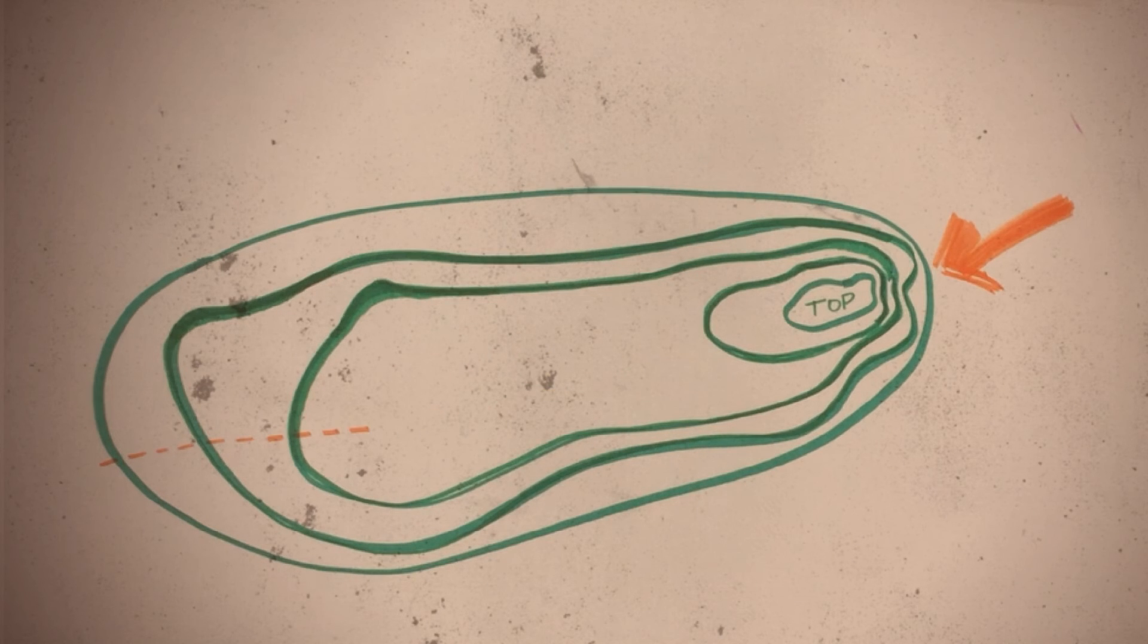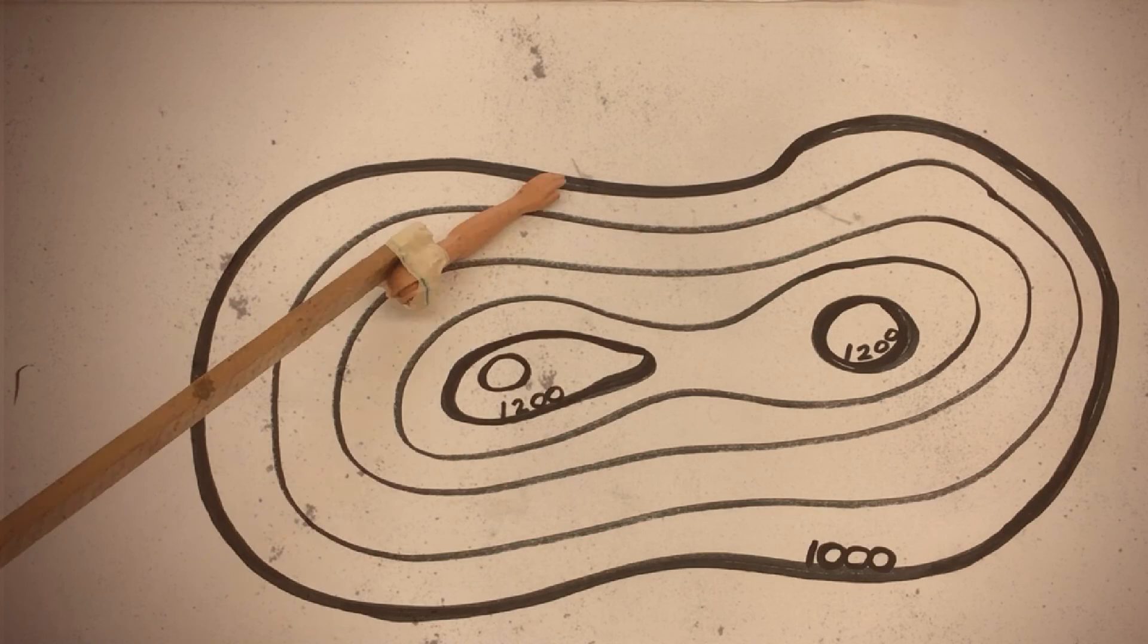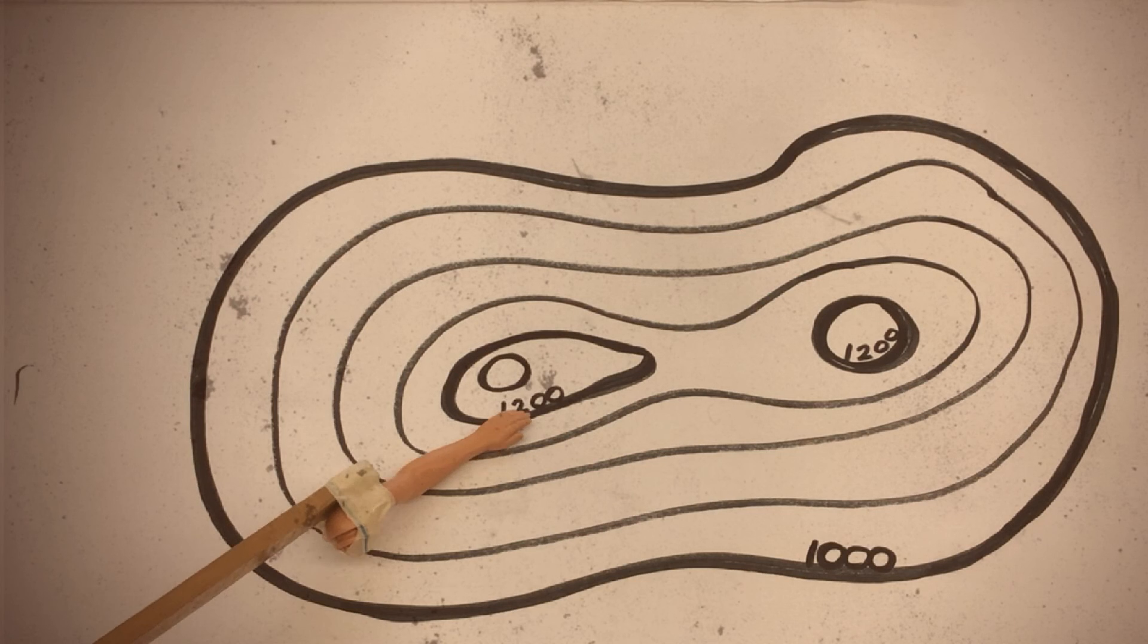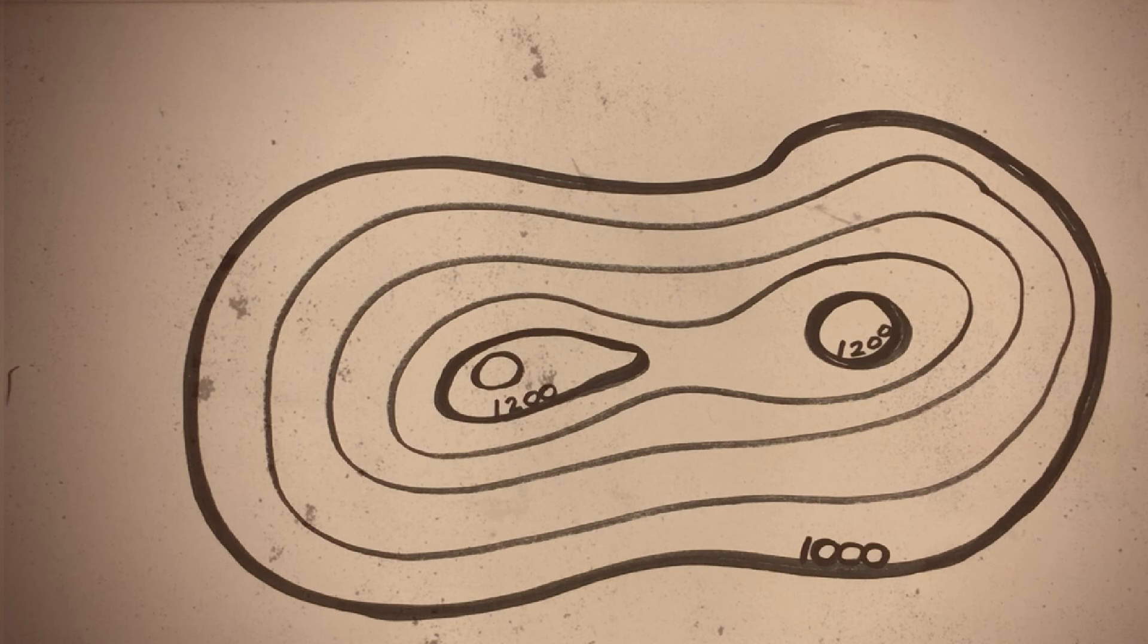When you look at a topographic map, you immediately realize there are many lines, not just one. And some lines have numbers on them. These are called index contour lines. Notice how they are darker than the other contour lines. Index contour lines give the exact elevation of one specific line and make topographic maps much easier to read.